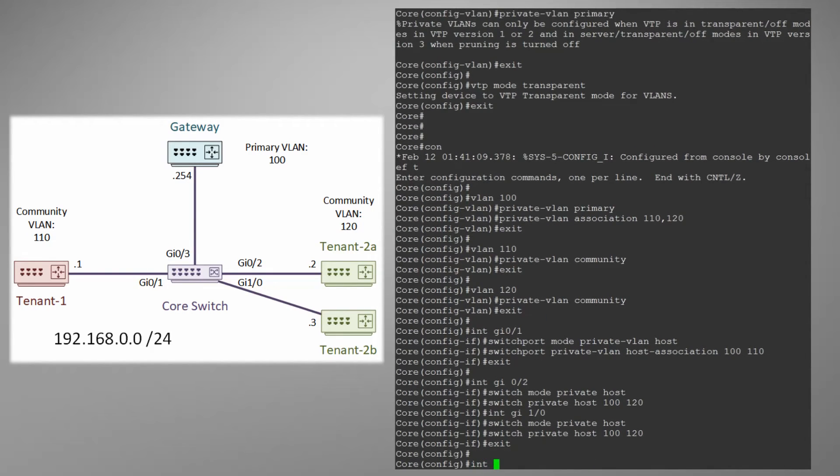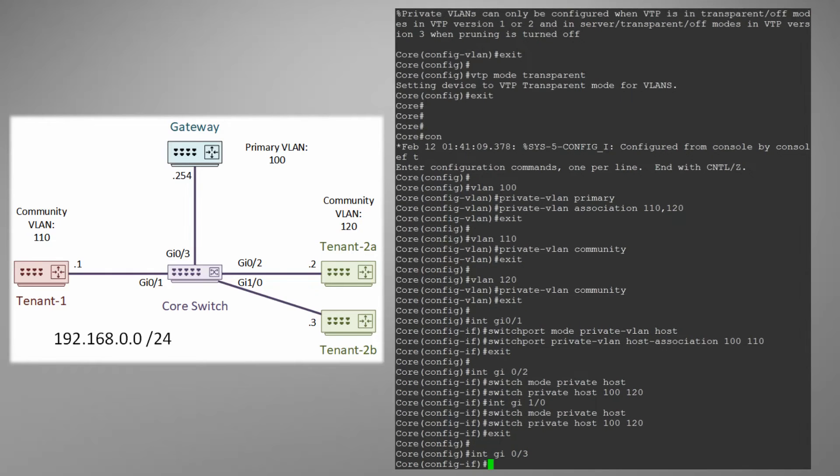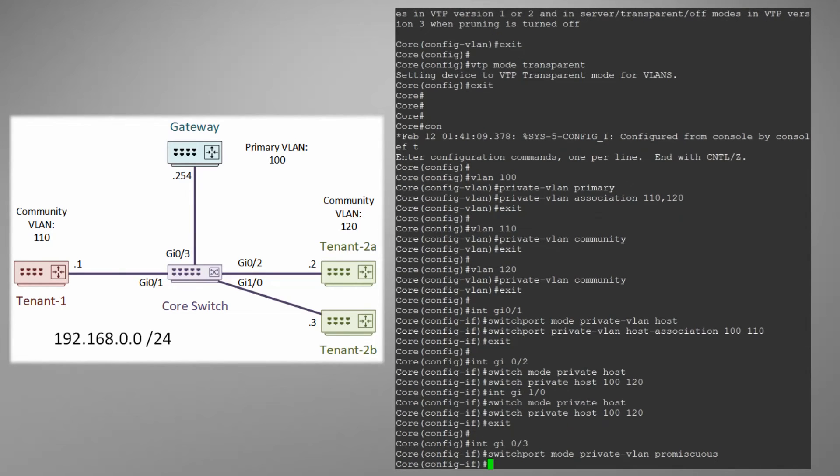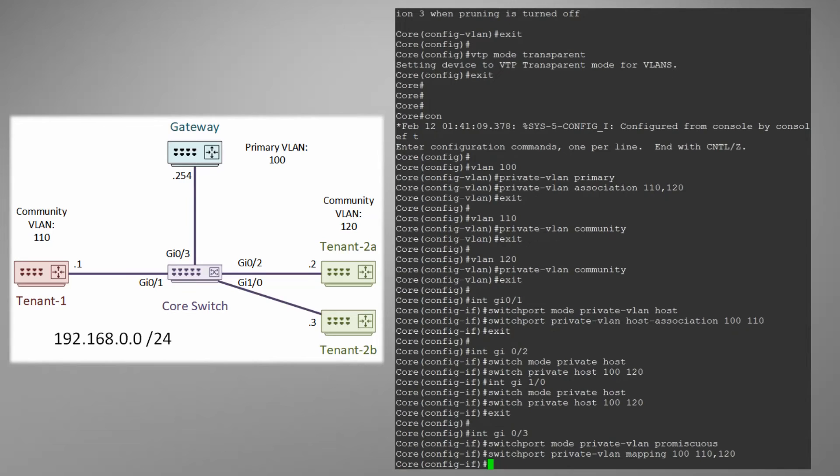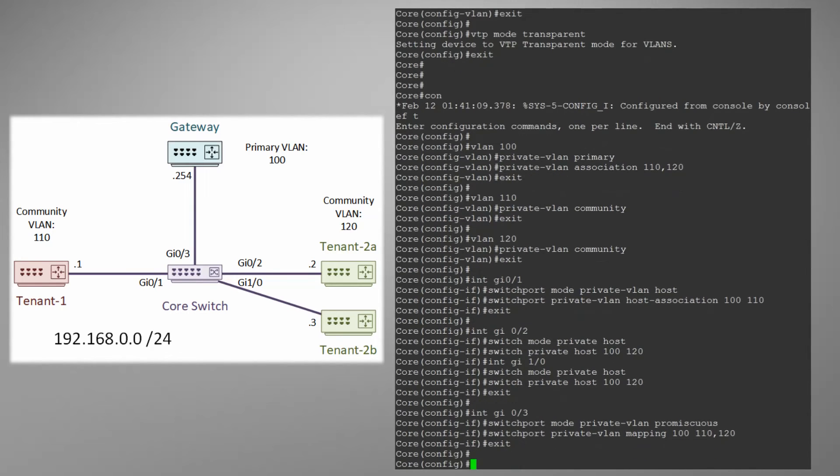The gateways port is a little different but not by a lot. We still set the mode but instead of setting a host port we configure it as a promiscuous port. We then add it to VLAN 100 and map the two secondary VLANs. If we didn't add the secondary VLANs here the device on this port would simply not talk to those VLANs. But that too has its uses.